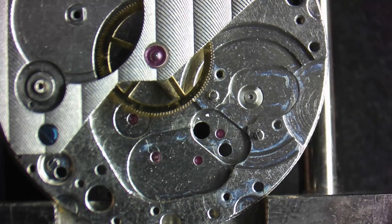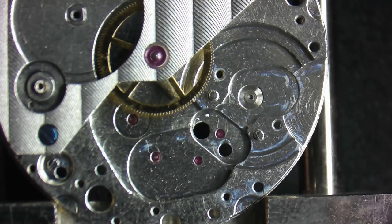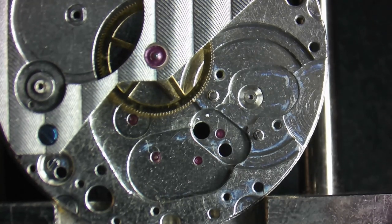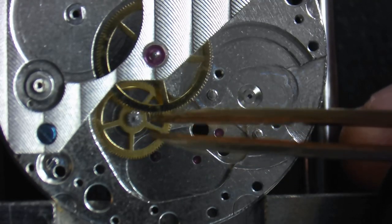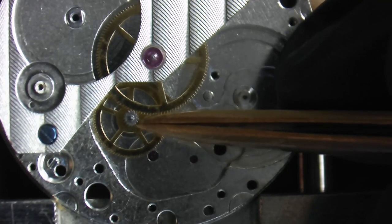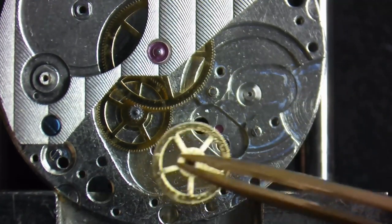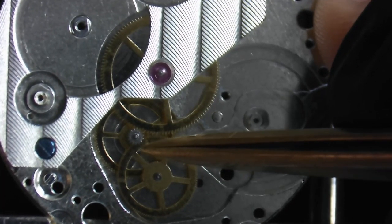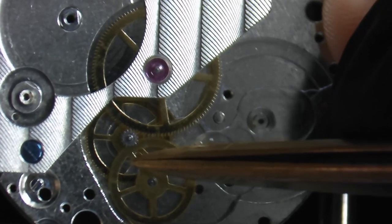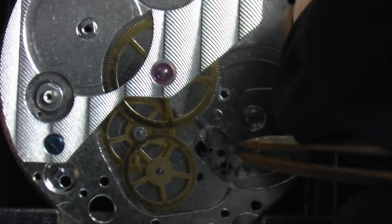In the train bridge, sometimes the order of how the wheels are to be installed matters. In this particular movement, it doesn't really matter as much. You could put the third wheel and the escape wheel in and then put the minute wheel. But what we're going to do is put the third wheel in first. At this point, you want to make sure that the lower pivot is in its jewel hole. Now we'll install the fourth wheel. You can clearly see why the cutout on the third wheel is necessary for the clearance of the fourth wheel. And then we can slide in the escape wheel.